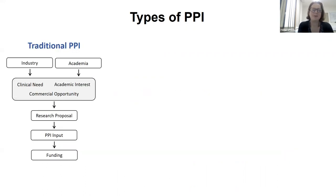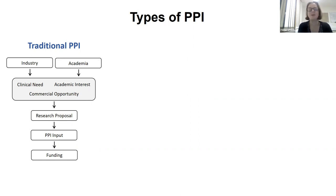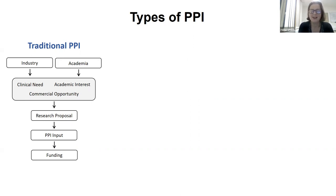There are different types of PPI. What we often call more traditional PPI is when industry or academia have formulated a research question, identified an area of clinical need, academic interest, or a commercial opportunity. They've formulated a research proposal, drawn up a protocol, drawn up a patient information sheet. And it's often at this point that patient and public involvement is requested — prior to a funding application. Many funding applications now mandate that there is patient public involvement before you can submit.